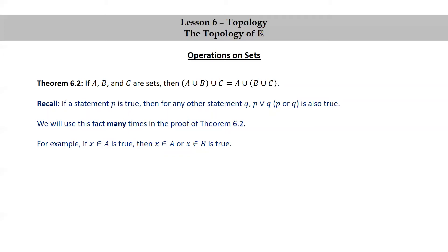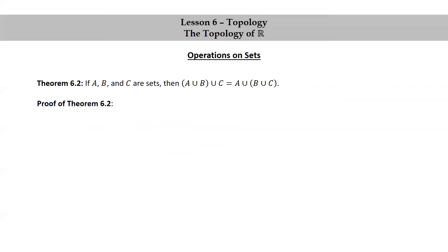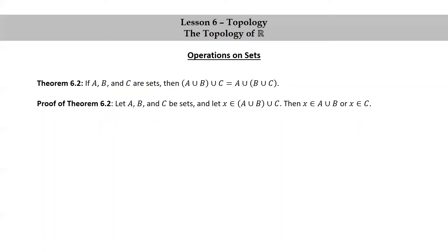Proof of theorem 6.2. Let A, B, and C be sets. We're going to start by showing that the left-hand side is a subset of the right-hand side. So we'll let X be in (A union B) union C. By the definition of the union, that means that X is in A union B or X is in C. So we're going to do each of these cases separately.